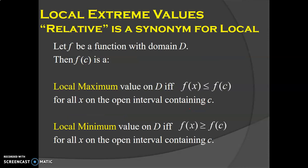Then we started talking about local or relative extrema. A local maximum is the highest point on an interval; a local minimum is the lowest point on an interval. So if you think about a polynomial curve that goes up and down, each of the peaks are local maxes and each of the valleys are local mins. They could be curved where f prime is zero, or corners or cusps where f prime would be undefined. So f prime is either zero or undefined where you have local extrema.